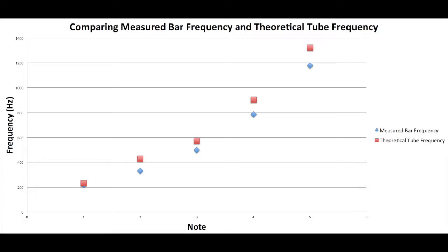However, when we measure the theoretical resonance of each tube using the relationship frequency equals C over 4L, where C is the speed of sound and air and L is the length of the tube, comparing this with the frequency of its associated bar, we see that in fact the tubes are designed to resonate at a frequency slightly higher than that of their associated bar. Why is this?